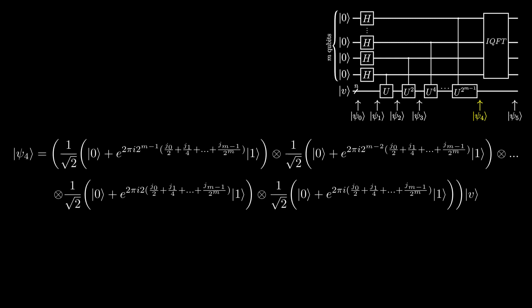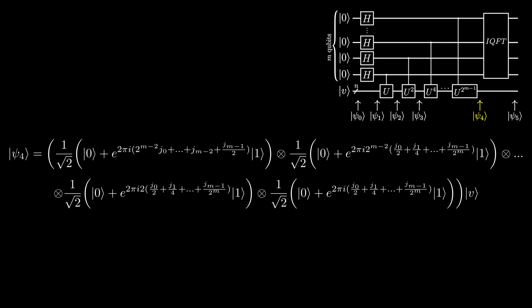Now, if we look at the first qubit, we have a factor of 2^(m-1). If we distribute that into j, we get this. Since all these terms are integers, when we expand them out, there will be a factor of 2π.